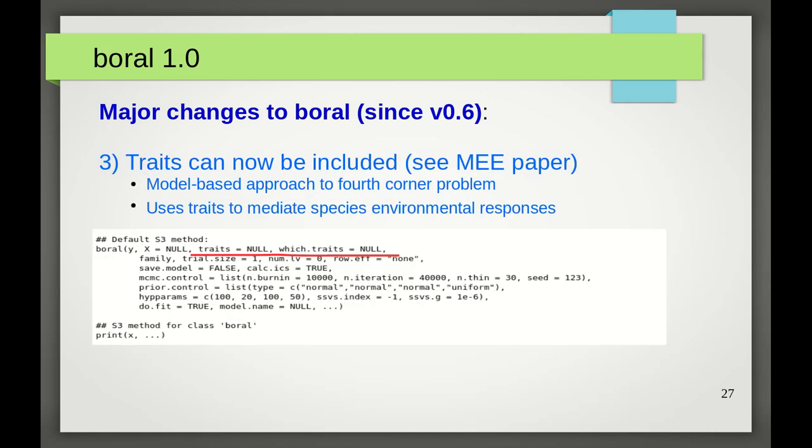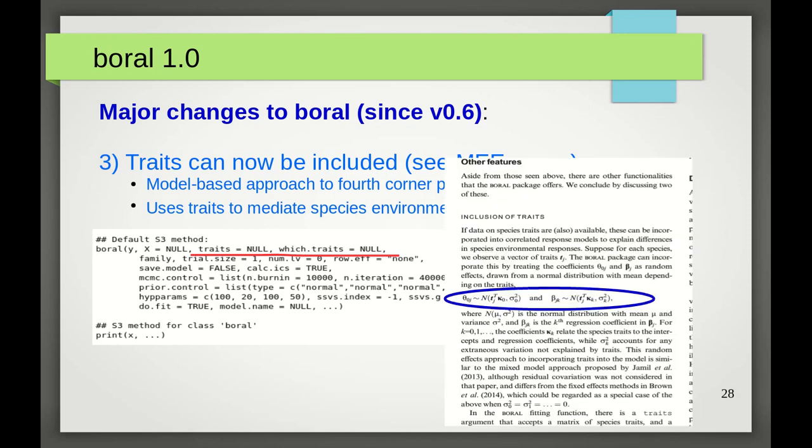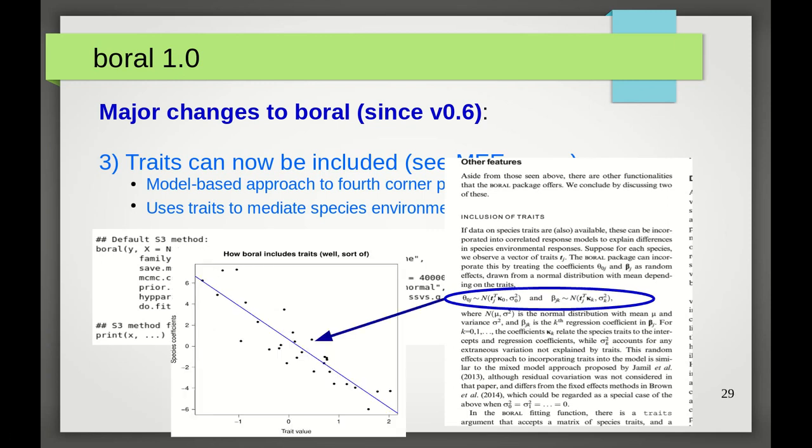Number three. Traits. Yes, you can now include traits in boral. Specifically, boral offers a model-based approach to tackling the fourth-corner problem, to see if traits mediate species' environmental response. The details and examples of this can be found in the Methods in Ecology and Evolution paper. But in brief, what boral does is treat the species-specific coefficients as random effects, and draws them from a normal distribution with a mean that is a linear function of the traits. In other words, it's kind of like fitting a linear model, with species-specific coefficients as the responses, or response values, and trait values as the predictors.